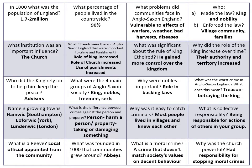Around the year 1000, the population of England was between 1.7 and 2 million. At this time, 90% of people lived in the countryside. The problems that communities faced in Anglo-Saxon England were that they were vulnerable to the effects of warfare, weather, bad harvests and diseases.